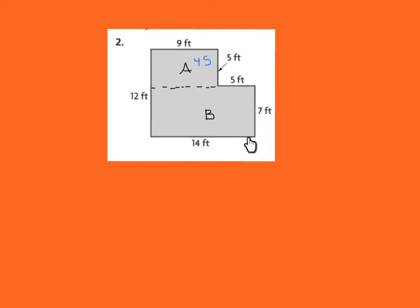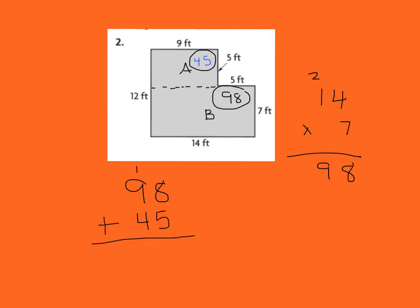Rectangle A was 9 times 5 which is 45 squared feet. Rectangle B would be 14 times 7. 7 times 4 ones is 28 ones. 7 times 1 ten is 7 tens plus 2 more is 9 tens. Therefore rectangle B is 98 squared feet. We line up our tens and ones place: 98 plus 45 equals 143 squared feet for the combined rectangles.